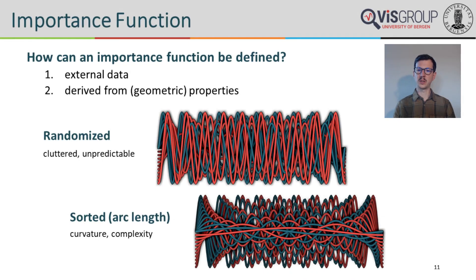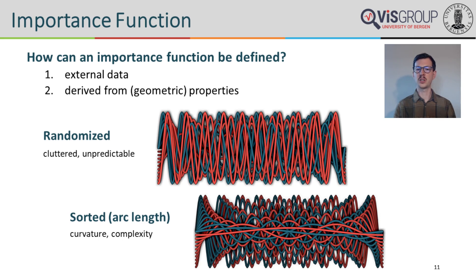It is now time to define importance functions and where they may originate from. In principle, there are many different ways importance could be defined. First and most naturally, the importance value itself may be part of the underlying data, such as confidence or the result of a feature detection algorithm. In many cases, however, such domain-specific explicit importance measures may not be available. In this case, we may instead want to use a more fundamental property of the lines themselves. Our goal is to minimize the amount of overdraw in a heuristic manner by assigning lower importance values to lines that take up more screen space. A simple way to achieve this is by specifying importance based on the arc length of each line, and the impact of this simple yet powerful geometric property is shown here.